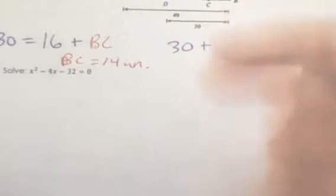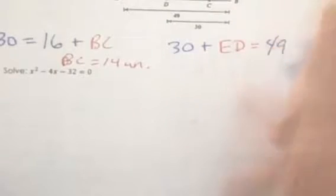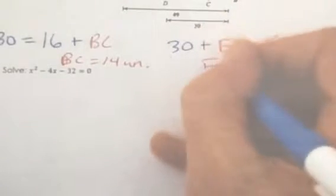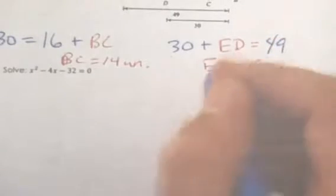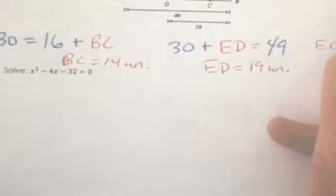Now we can find ED because ED plus the rest of it, which is 30, equals the entire thing, 49. So now subtract 30 from both sides. 49 minus 30 is 19. And now it asks us to find EC. EC equals 19 plus 16, which is 35 units.